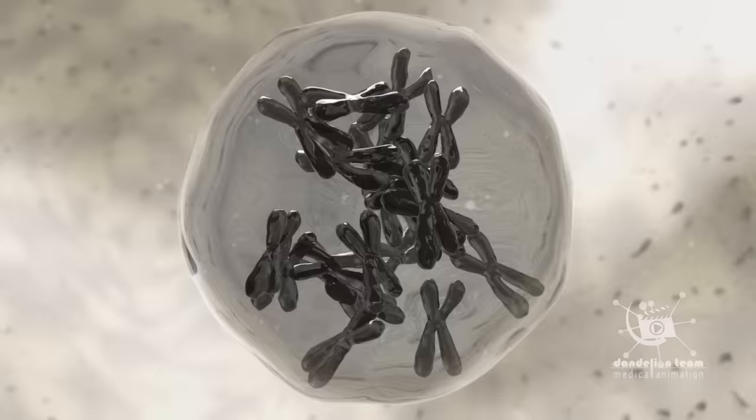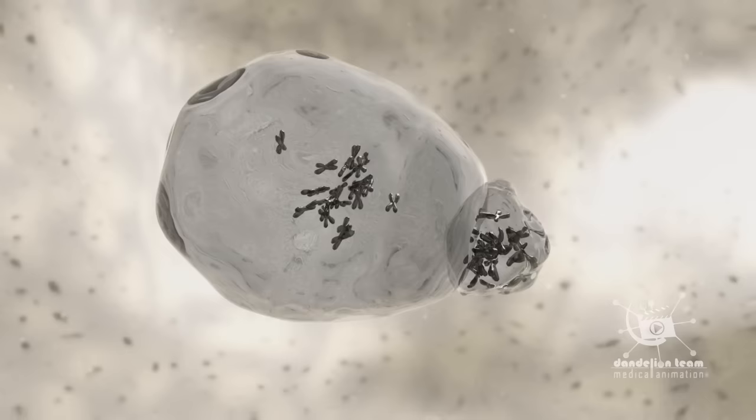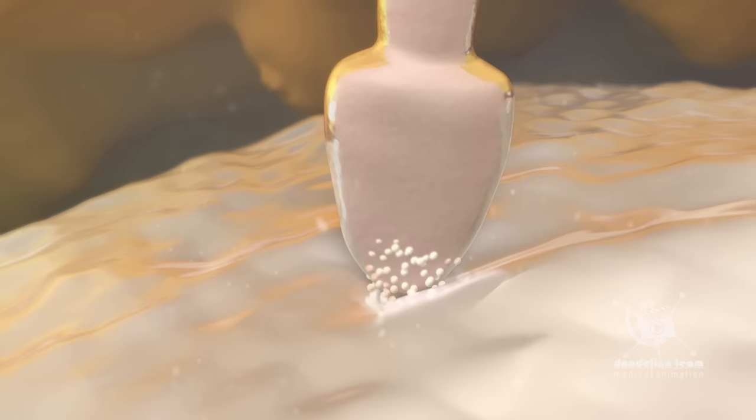The sperm head contains chromatin, which is the DNA material that makes up chromosomes. Typically both the human sperm cell and the human egg cell each contain 23 chromosomes. When the sperm and egg combine, this results in an embryo cell with 46 chromosomes. Covering the head of the sperm is a cap called an acrosome. The acrosome contains enzymes that help the sperm penetrate the outer shell of an egg.